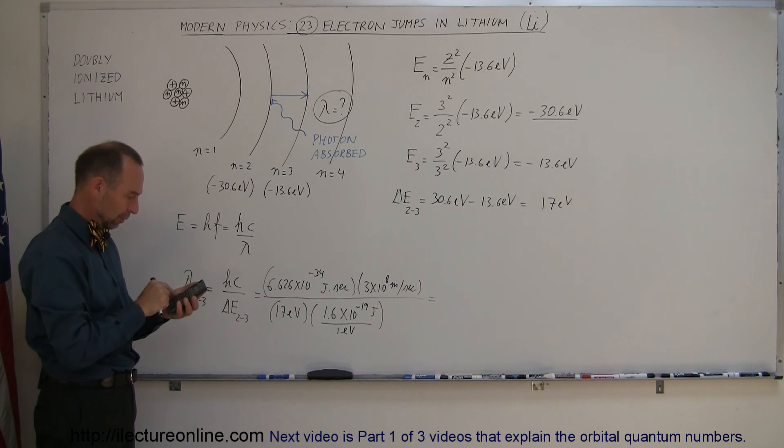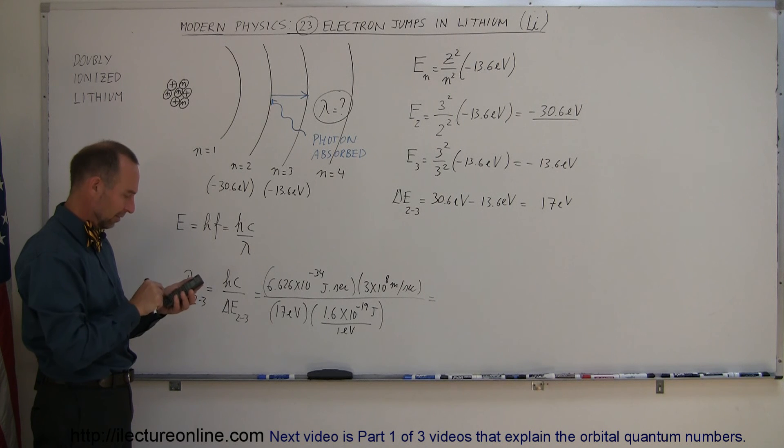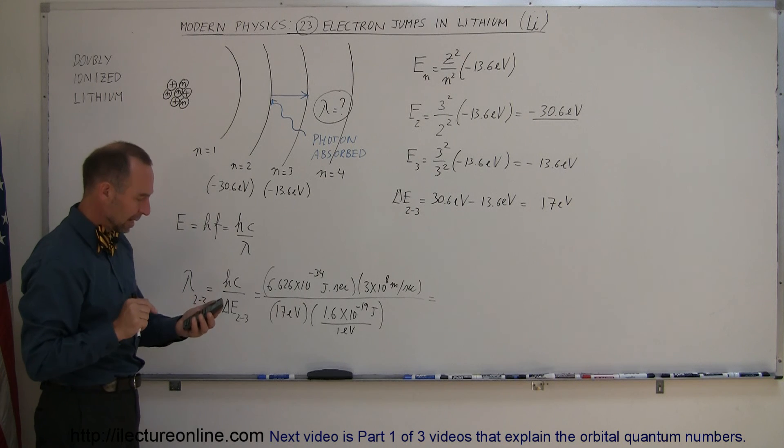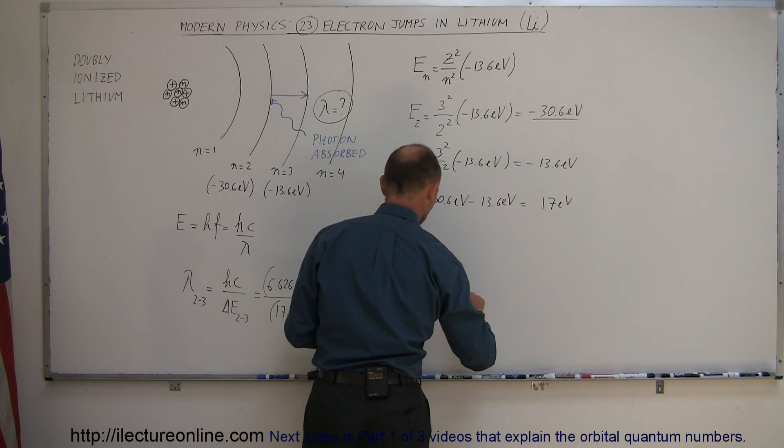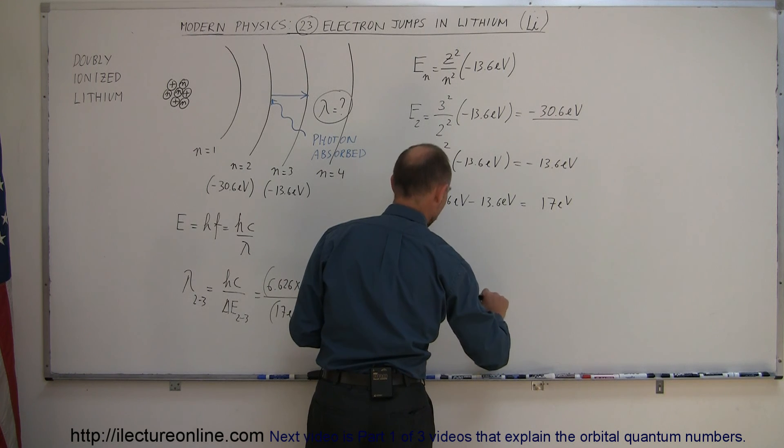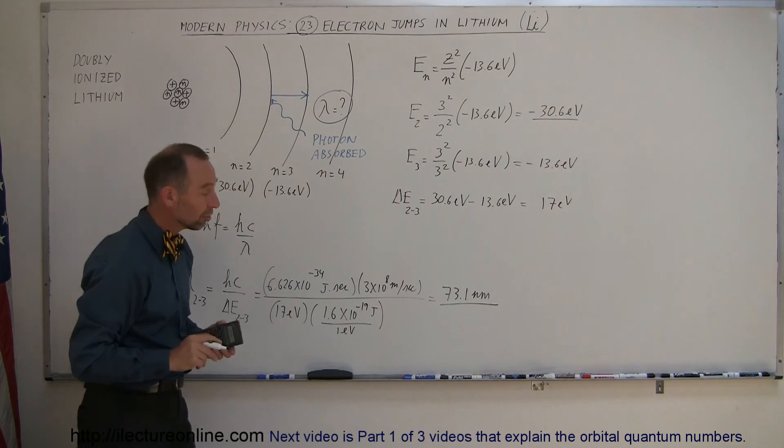6.626e-34 times 3e8 divided by 17 and divided by 1.6e-19, and we get 73.1 nanometers. So, that would be ultraviolet radiation.